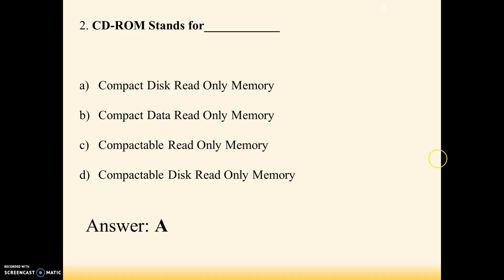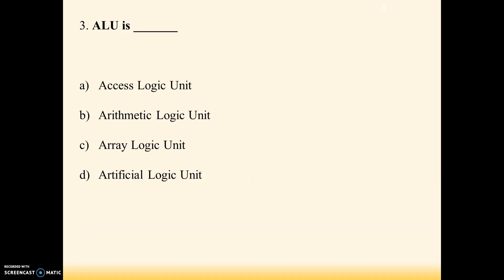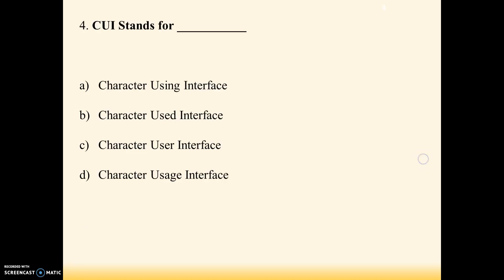Next question: ALU — options are A: access logic unit, B: arithmetic logic unit, C: array logic unit, D: artificial logic unit. Answer is B — arithmetic logic unit. The full form of ALU is arithmetic and logical unit. We also have two more units: CPU (central processing unit) and memory unit.